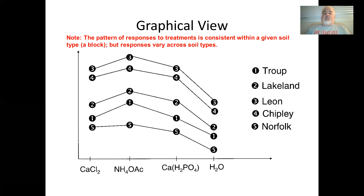The pattern of responses to treatments is consistent within a given soil type or block, but responses vary across soil types. Clearly, if you want to maximize your yield of sulfur, Leon soil is the better soil — but you can't always go to Leon soil. You have to go where you can mine, where the soil is. Preferentially you'd choose Leon soil, certainly over Norfolk or Troop.